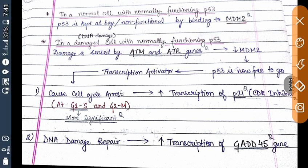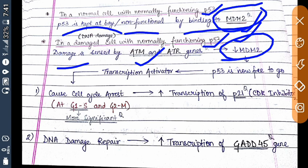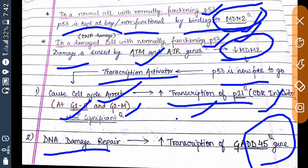In a normal cell with normally functioning p53, p53 is kept non-functional by binding to MDM2. In a damaged cell with normal p53, if DNA damage occurs, it is sensed by ATM and ATR genes. This leads to downregulation of MDM2, causing release of p53. As a transcriptional factor, p53 then causes cell cycle arrest at G1/S or G2/M, increases transcription of p21 (a CDK inhibitor), and can also lead to DNA damage repair by increasing transcription of the GADD45 gene.